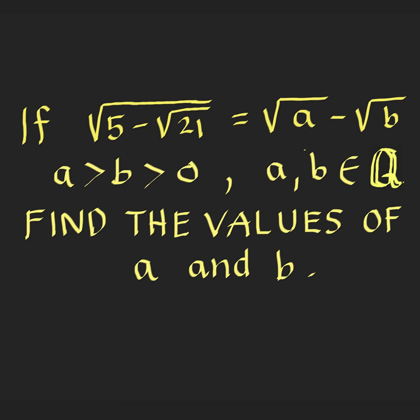Hey everyone, here's our math problem for today. If this nested radical, square root of 5 minus square root of 21, equals square root of A minus square root of B, where A is greater than B and B is greater than 0, what are the values of A and B?